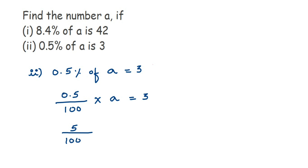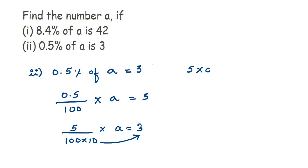Since the 10 goes into division alongside the 100, we multiply them together in the denominator. So we have: 5a / 1000 = 3. Now I'll transpose 100 and 10 to the other side — dividing goes to multiplication — so we get: 5 × a = 3 × 100 × 10.